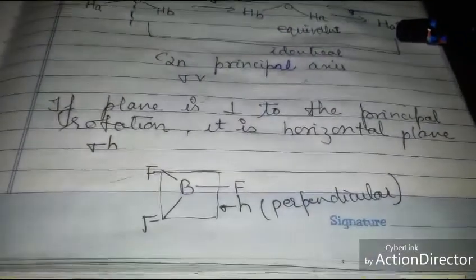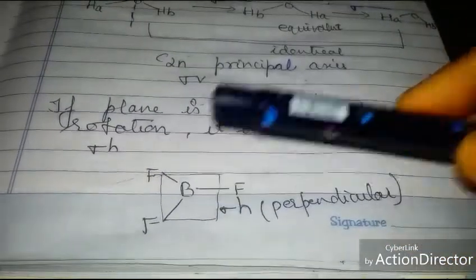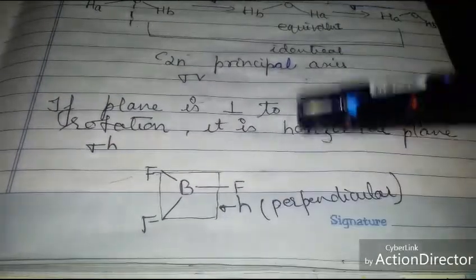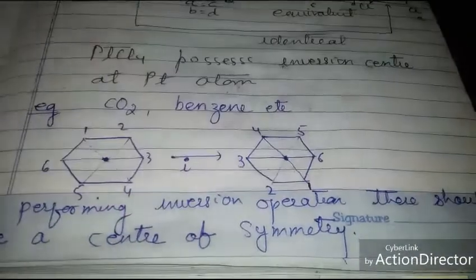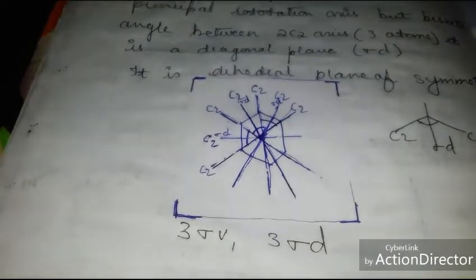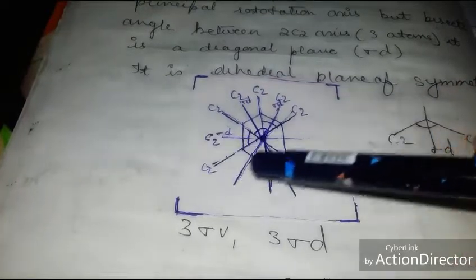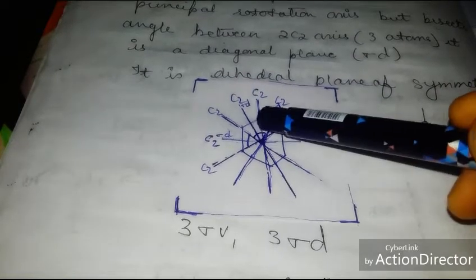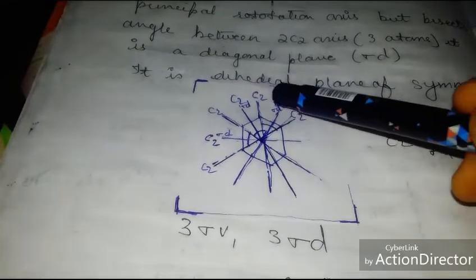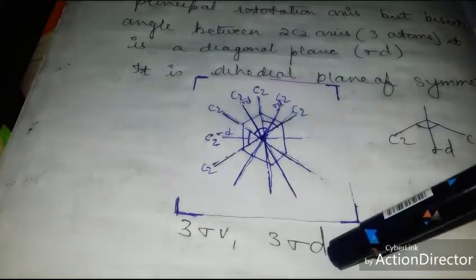For BF₃, which is planar, there is a plane perpendicular to the molecular plane called σₕ, the horizontal plane of symmetry. There is also a third type, σ_d (dihedral plane). In benzene, between two C2 axes there is another plane bisecting the angle between two C2 axes — that is the dihedral plane of symmetry σ_d. So benzene has three σᵥ and three σ_d planes.